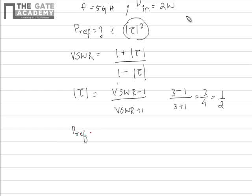Now we know that the power reflected back, Pref, is given by |τ|² times Pin.